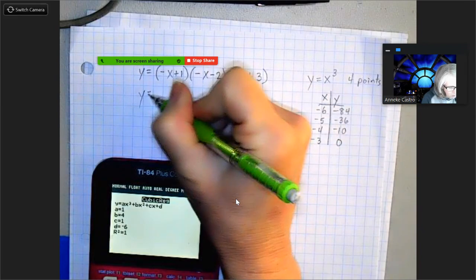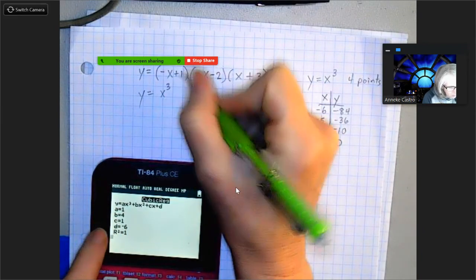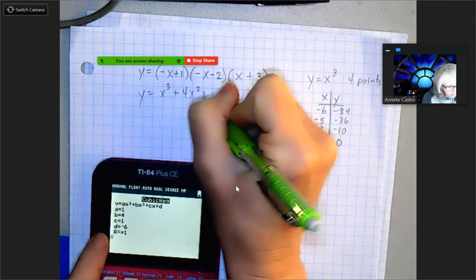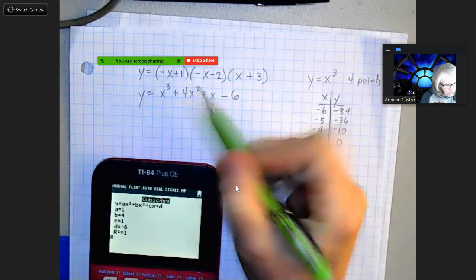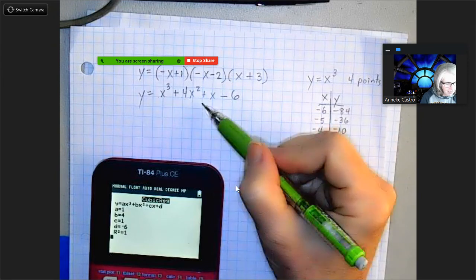This in standard form is going to be y equals my a value is one, so that's x cubed, one x cubed plus four x squared plus one x minus six. Because my a is one, my b is four, my c is one, and my d is negative six. Standard form and I didn't lose any negatives.